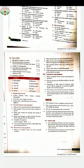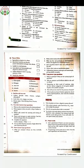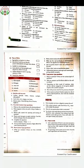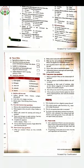Second one: Rhizobium bacteria can directly convert atmospheric nitrogen into nitrate. Yes, it is True — Rhizobium bacteria directly convert atmospheric nitrogen into nitrate. Third one: Dodder is totally parasitic in nature. Yes, it is True.